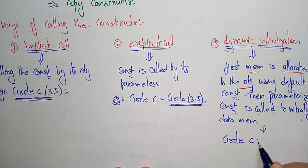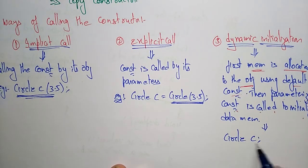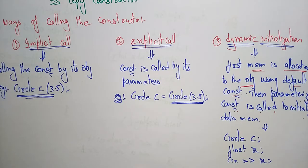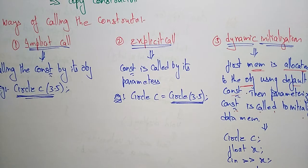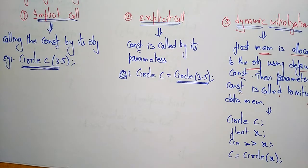The example for dynamic initialization: `circle c` — here the object `c` is declared first, so memory is allocated. Then `float x` is declared, and the user inputs a value: `cin >> x`. After that, `c = circle(x)` is called. The value `x` is entered by the user at runtime.